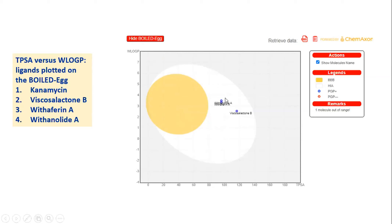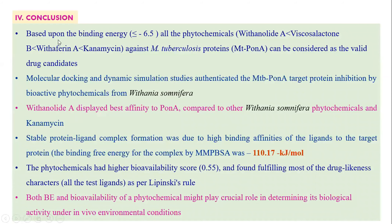PgP enzyme action: all ligands are positive (shown in blue), meaning PgP substrate status applies to all. Ultimately, based on binding energy, all values were less than minus 6.5 kcal/mol. The binding affinity order was: Withanolide A > Viscosalactone B > Withaferin A > Kanamycin, meaning binding energy was lowest (strongest affinity) for Withanolide A and highest for Kanamycin. Compared to Kanamycin, all phytochemicals from Withania somanifera showed higher binding affinity to the protein.